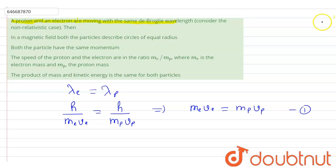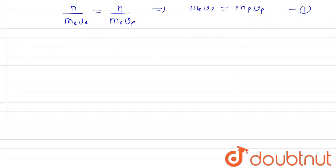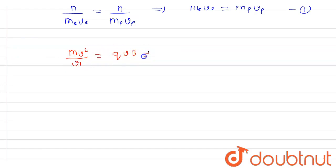Talking about the first option: in a magnetic field, both particles describe circles of equal radius. We know that when a charge moves in a circular path in a magnetic field, mv²/r = qvB, so the radius comes out as r = mv / (qB).